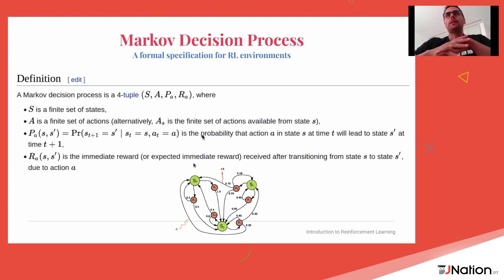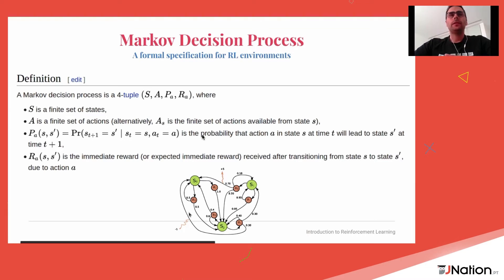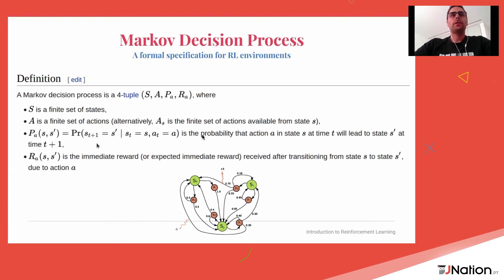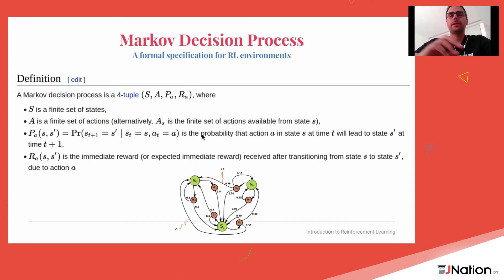Reinforcement learning is more formally specified by what is called the Markov decision process — a set of four main ingredients. S is the set of states allowed in your system. A is the set of actions you can take as an agent. P is the transition probability — a function that tells you, given that you are in state S and apply action A, what is the probability you will end up in another state S'. This encodes the environment dynamics: what are the rules of physics of your system? In addition, you have a reward function which tells you: if you are in this state and take this action and reach this next state, you get this reward.